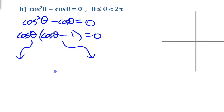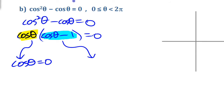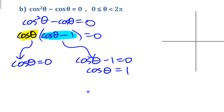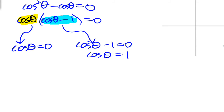We split it into two parts: either cos theta equals 0, or the second factor cos theta minus 1 equals 0, which means cos theta equals 1. Both of these are going to give us exact values. The easiest way to think about this is in terms of a unit circle.